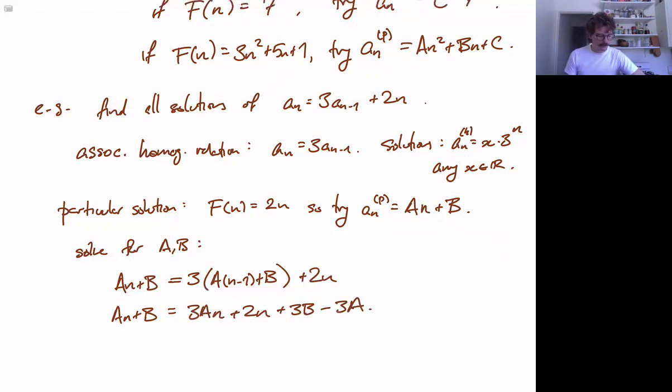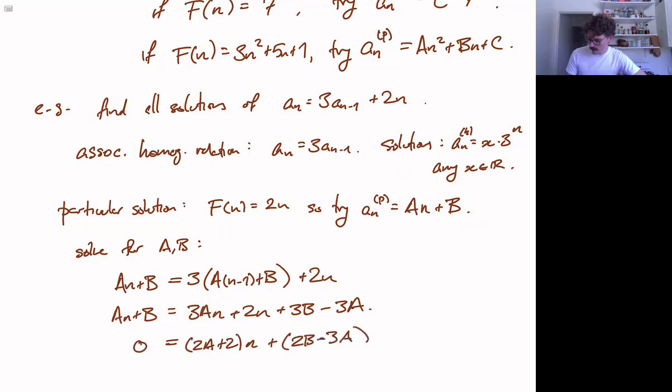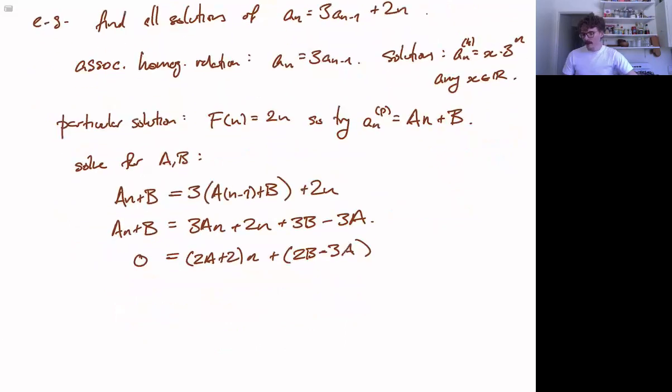So this is nothing special. We just expand it out this part and rearrange the terms a little bit. And now if we collect all of the a terms together, or sorry, we collect all the n terms together and all of the constant terms together we get 2 a plus 2 times n plus 2 b minus 3 a equals 0. And the point is that this is then our system of equations. Because if we're going to have this equation be true for all values of n then these two things had both better be 0 individually.